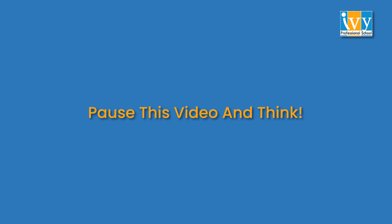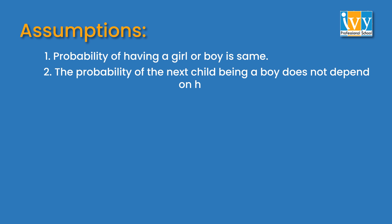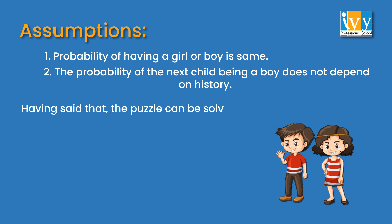For solving this problem, we first need to make a few assumptions. The first assumption being that the probability of having a girl or boy is the same. Also, the probability of the next child being a boy does not depend on history. Having said that, the puzzle can be solved by counting the expected number of girls prior to the birth of a baby boy.